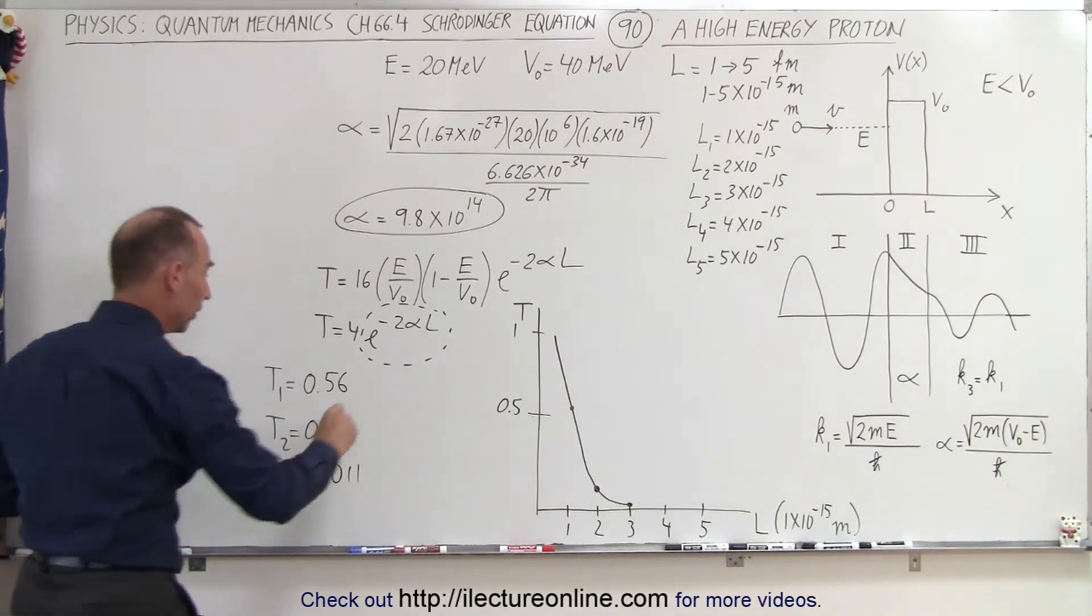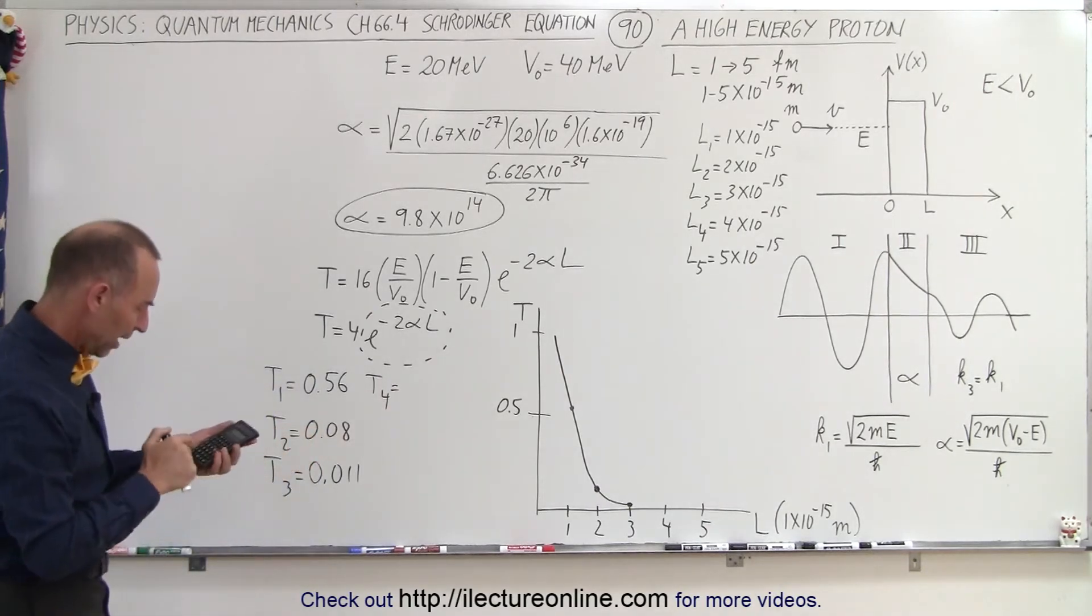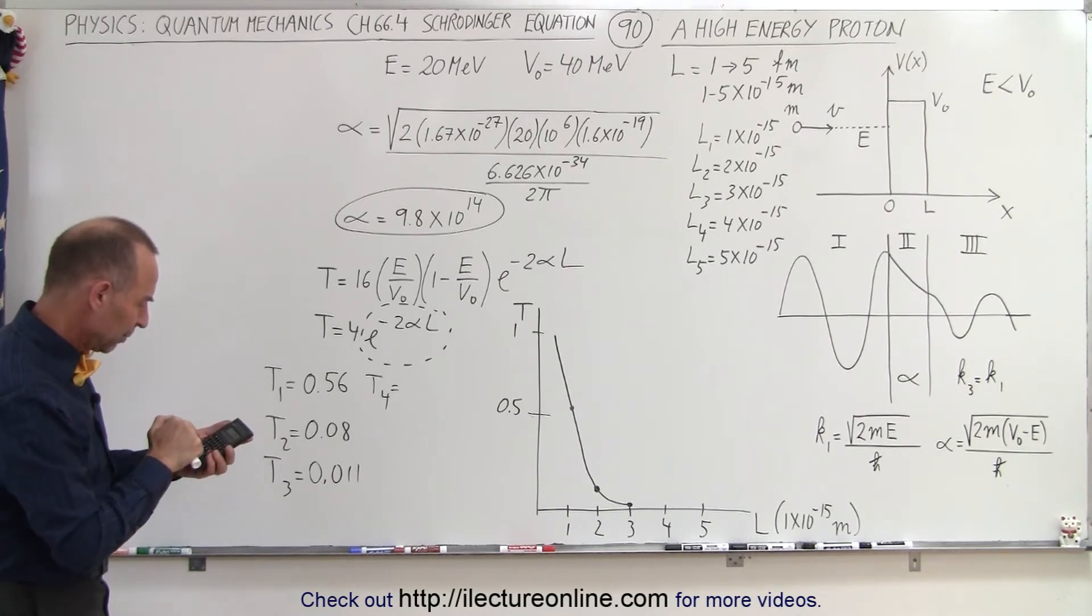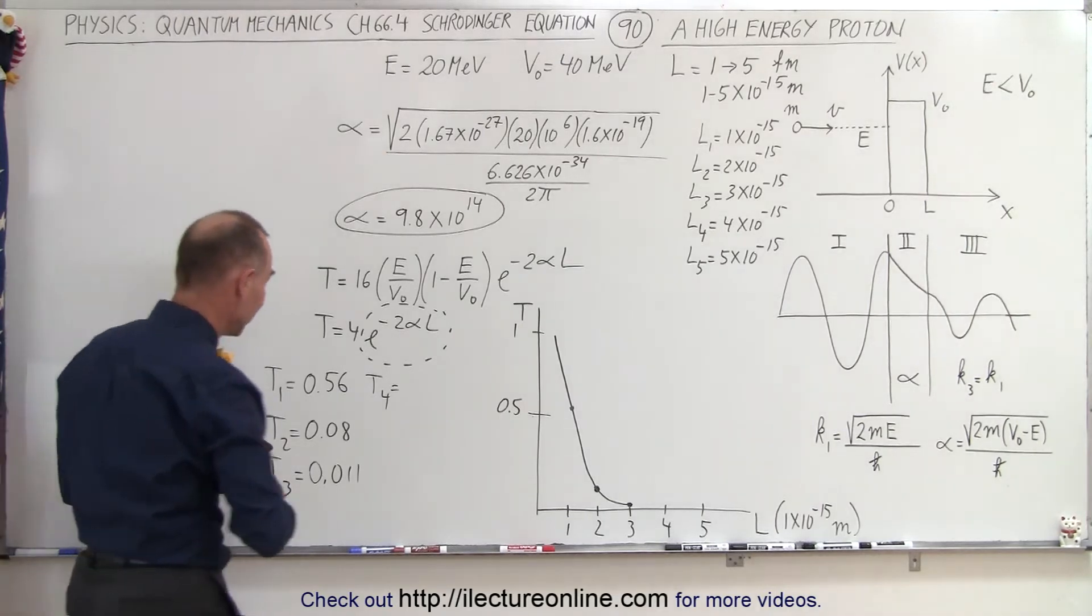All right, let's go for T4. T4 is equal to, so now we have 9.8 e to the 14th times, oop, not 1, but 4 e to the 15th minus, and times 4, negative, take exponents. So now we're at 1.55 times 10 to the minus 7. Oh, did I multiply times 4? I don't think I multiplied times 4.